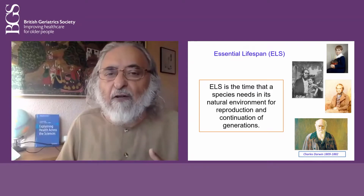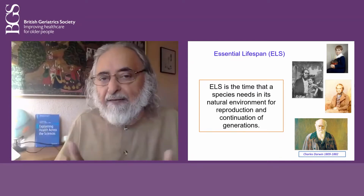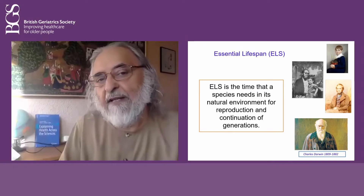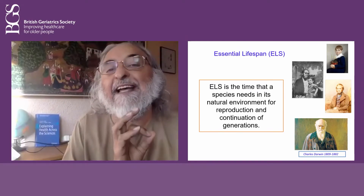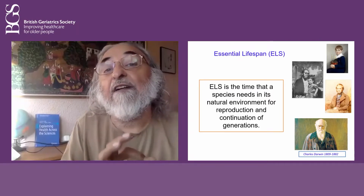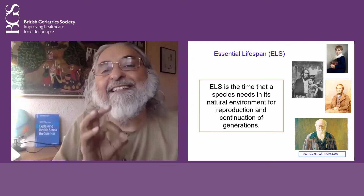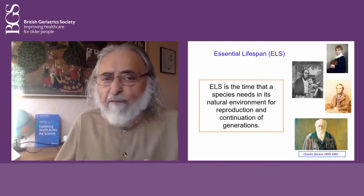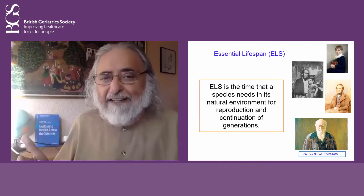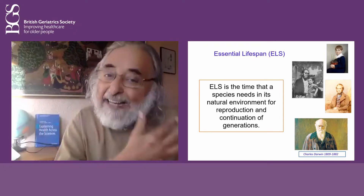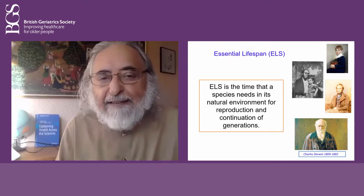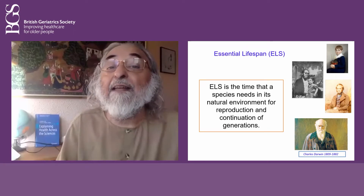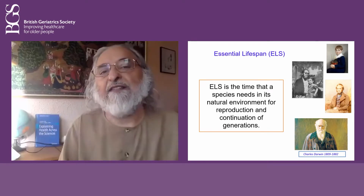Of course there will be some early deaths too, but not in numbers significant enough to affect the survival of the species. So essential lifespan is a very important concept in biogerontology — what is the species lifespan. Our species lifespan is around 45 years, and that is when old age starts. I know in modern times that sounds paradoxical, but historically and evolutionarily that period is more than enough needed, and very few people survived beyond it.